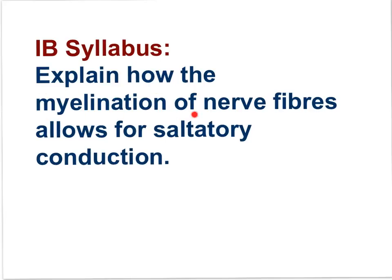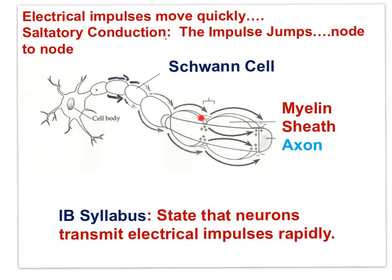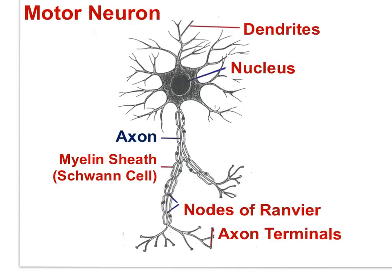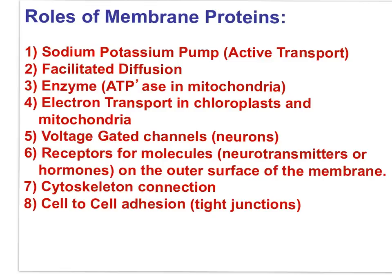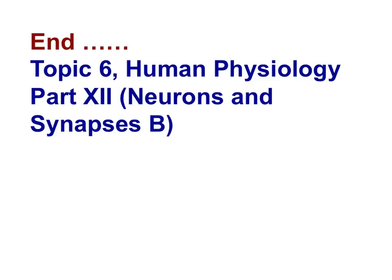Can you explain how the myelination of nerve fibers allows for saltatory conduction? The impulse jumps rapidly from node to node to node down the axon because depolarization of the axon membrane occurs only at the nodes of Ranvier. You should be able to label all parts of a motor neuron and indicate the direction the impulse is carried. With the study of the neuron, your knowledge of membrane proteins has grown tremendously. Here is a list of membrane protein functions to study on your own. That brings us to the end of IB Biology Topic 6 Human Physiology Part 12, Neurons and Synapses B.